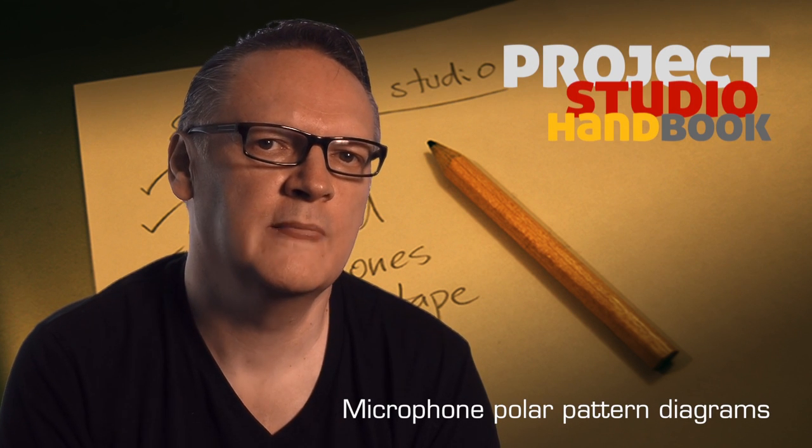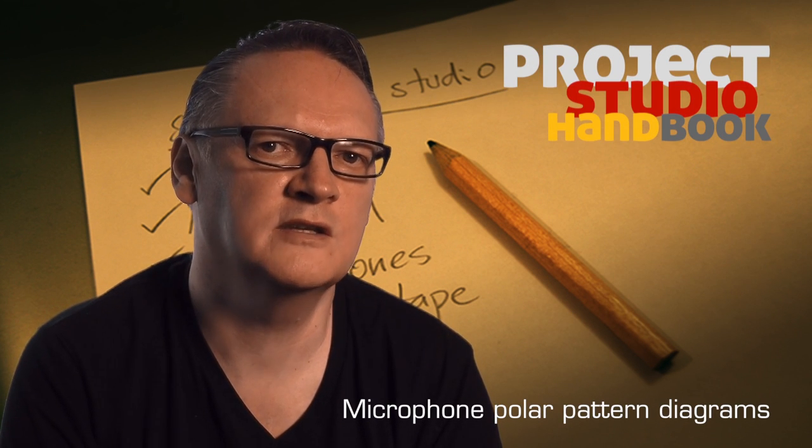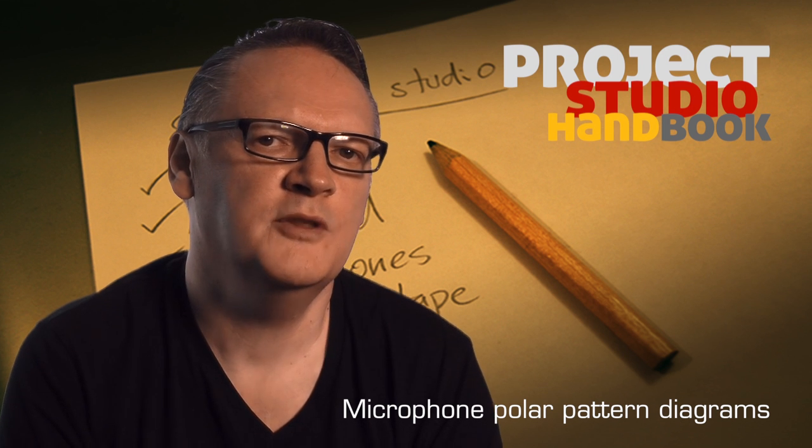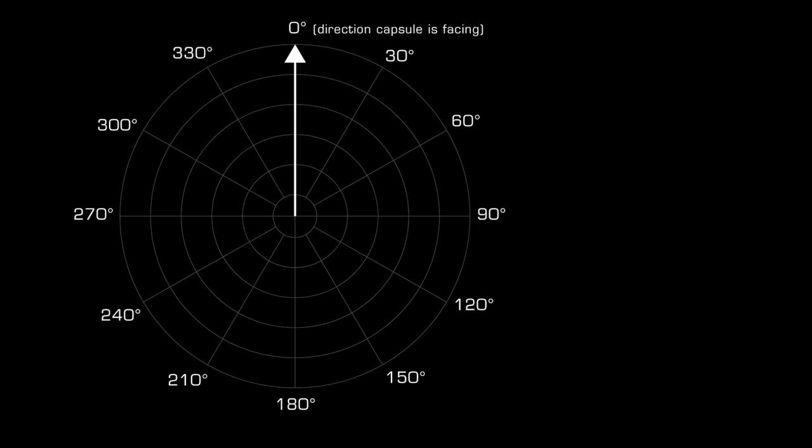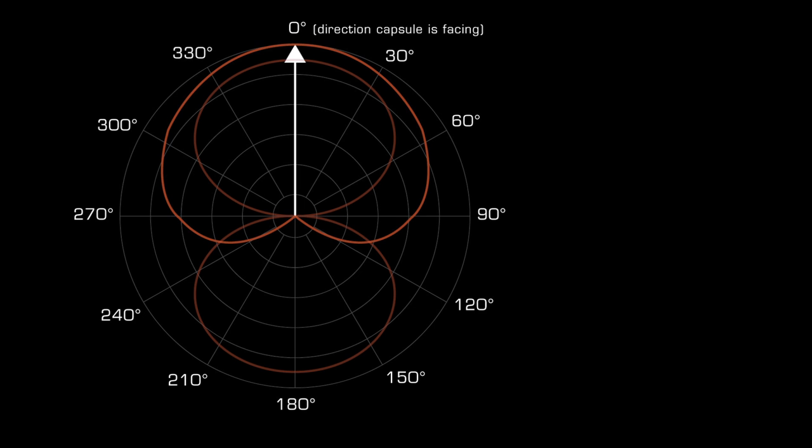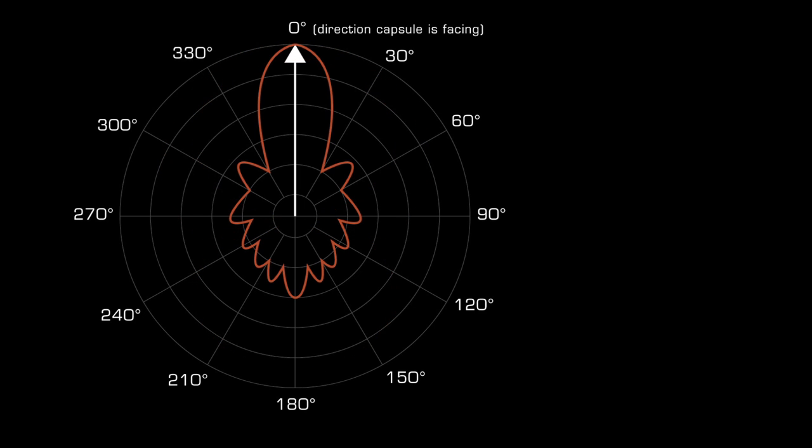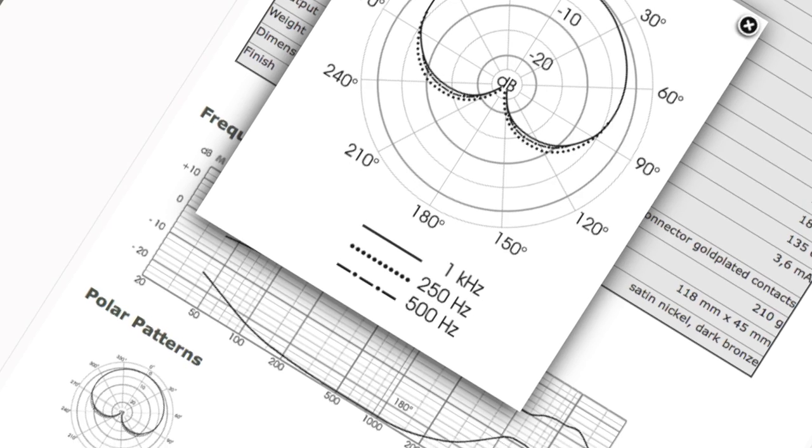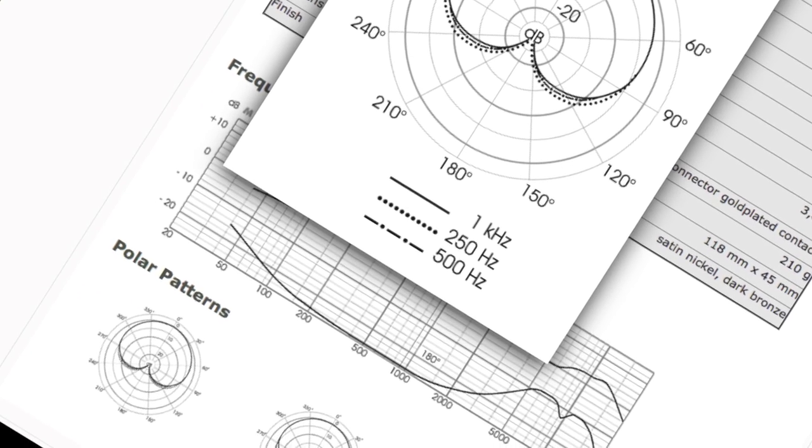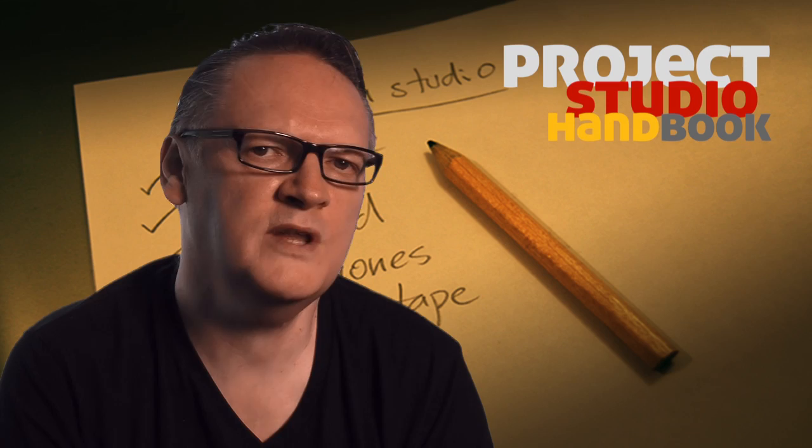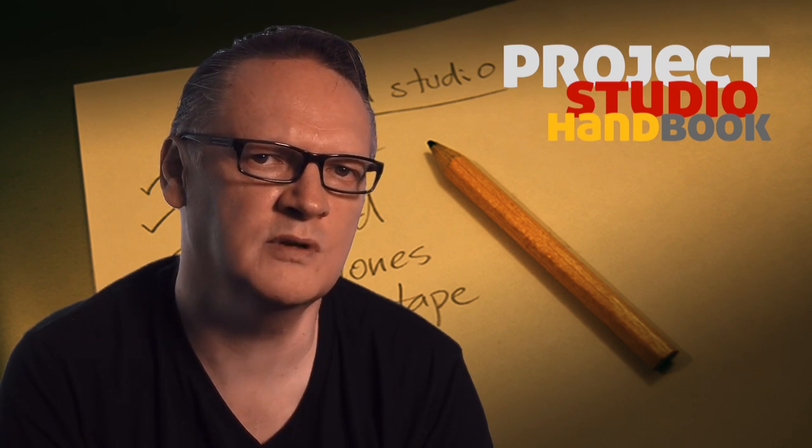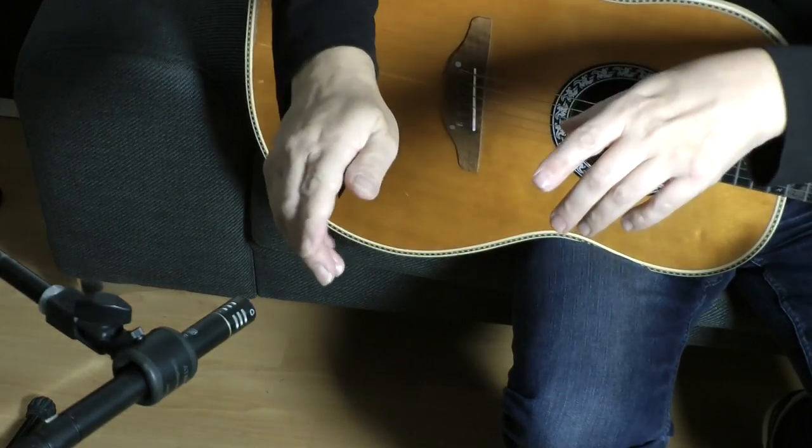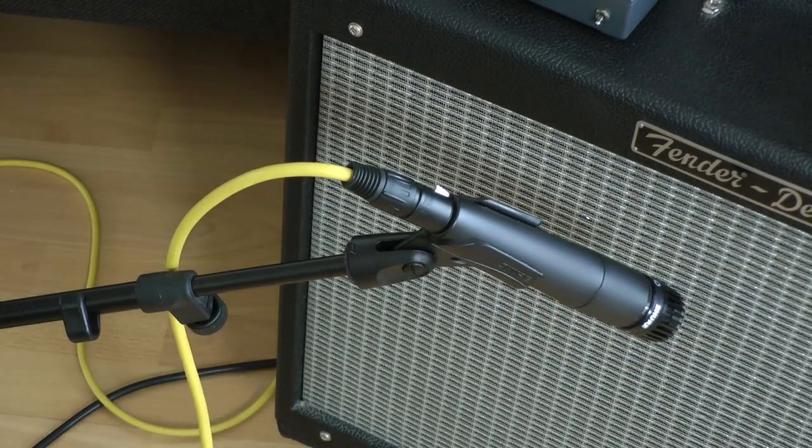Welcome to this tutorial on microphone polar pattern diagrams. The polar pattern diagram is used to show a microphone's sensitivity to sound arriving from different directions. They are primarily used by microphone manufacturers and displayed in a microphone's manual or technical specification. They can help us decide whether or not to purchase a microphone and which microphone to choose for a specific recording application.